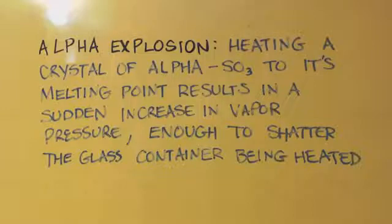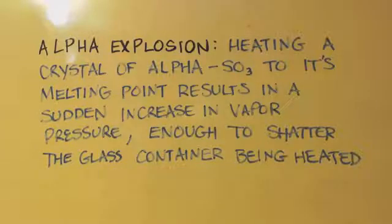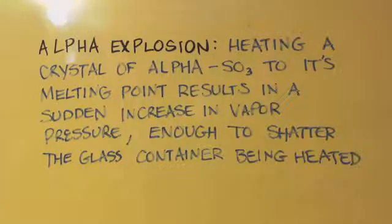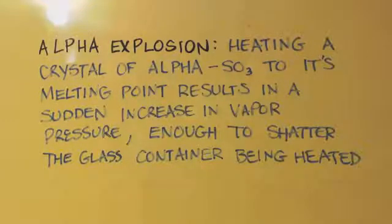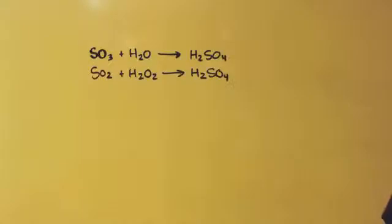I should bring up a safety issue since I mentioned SO3 — it's called alpha explosion. Heating a crystal of alpha sulfur trioxide to its melting point results in a sudden increase in vapor pressure, enough to shatter the glass container — that's what's known as alpha explosion. If you're doing stuff like this, start out simple. It's on you to figure out the safety precautions. A lot of things can explode that you don't even realize.